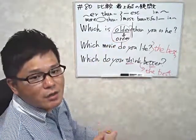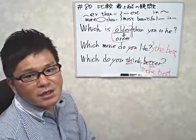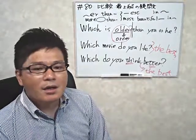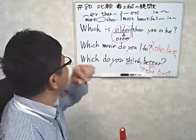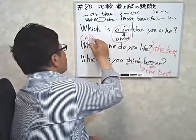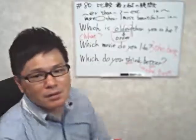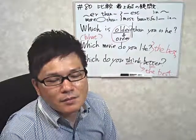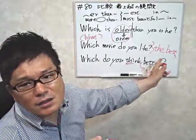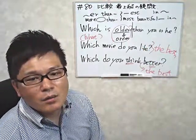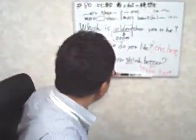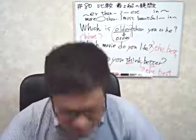使い分けも分かってきましたね。また「which」の代わりに「what」を使うこともできます。「What movie do you like the best?」と言えば、「何の映画が一番好き？」という表現になります。「which」と「what」を使い分けて表現できますので覚えておいてください。今日はここまでです。ありがとうございました！